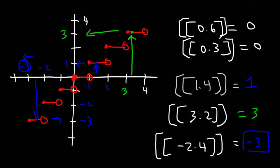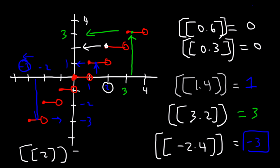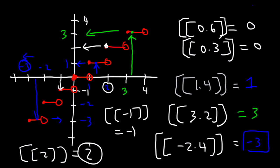Now you know how to evaluate using the graph. What is the greatest integer of 2? When x is 2, ignore the open circle — look for the closed circle, which gives y = 2. Similarly, the greatest integer of negative 1 equals negative 1. If the input is an integer itself, the greatest integer function returns that integer.